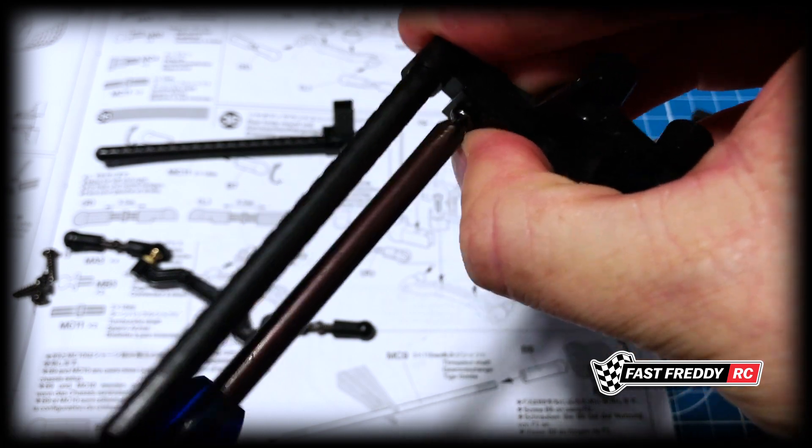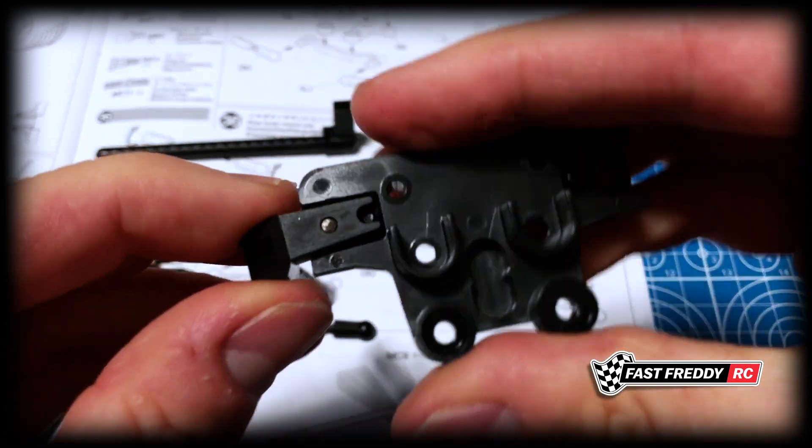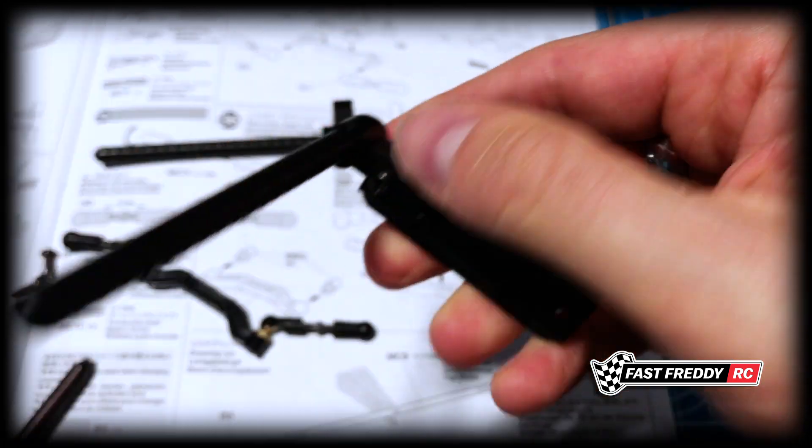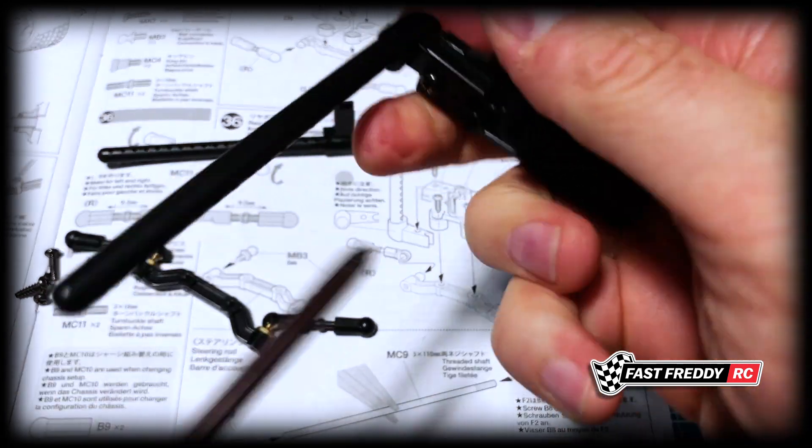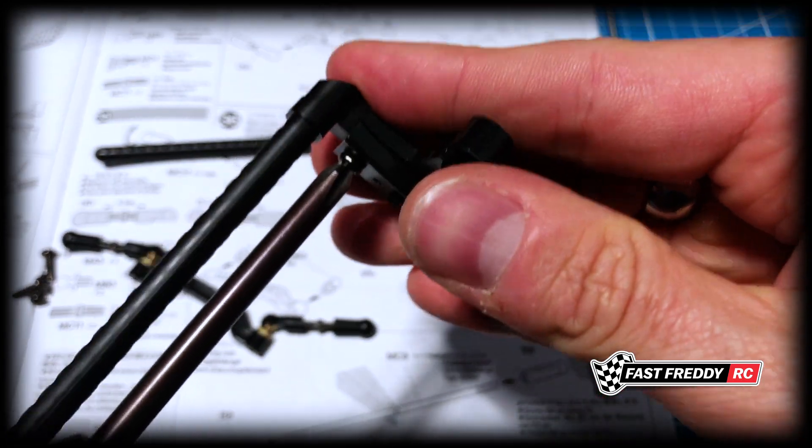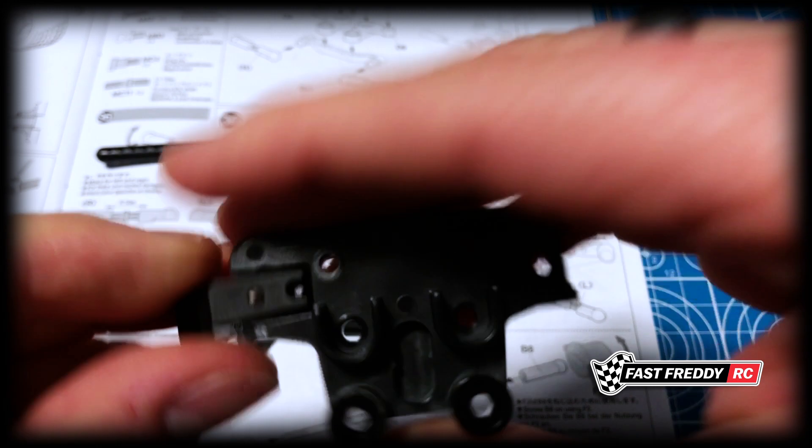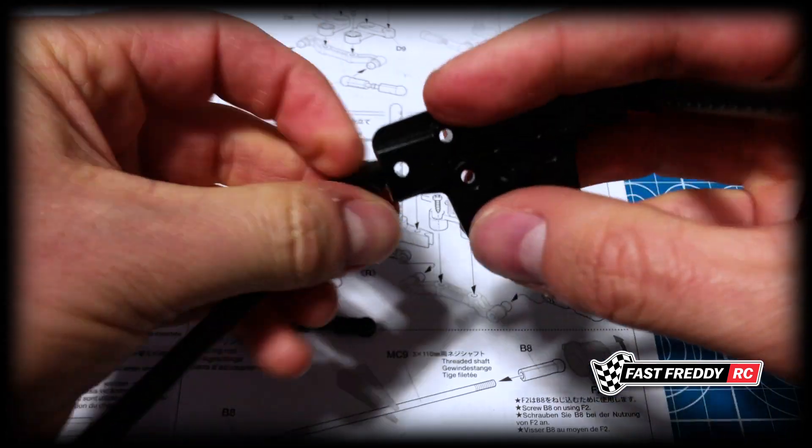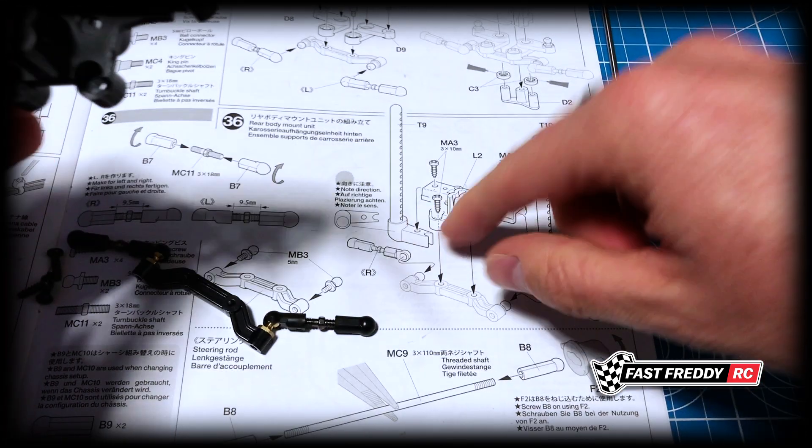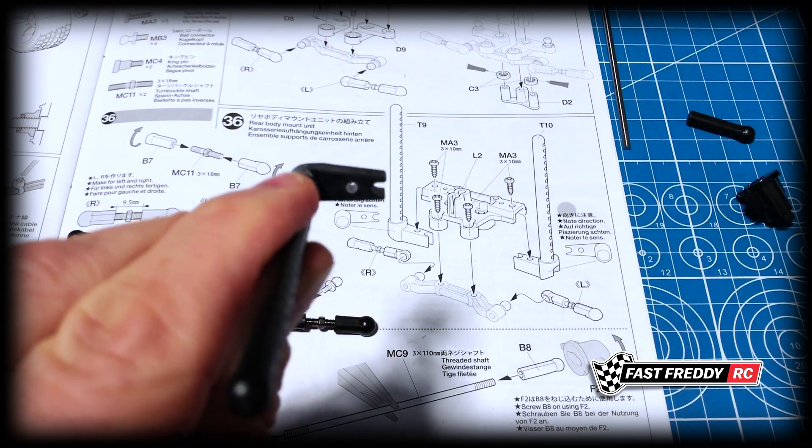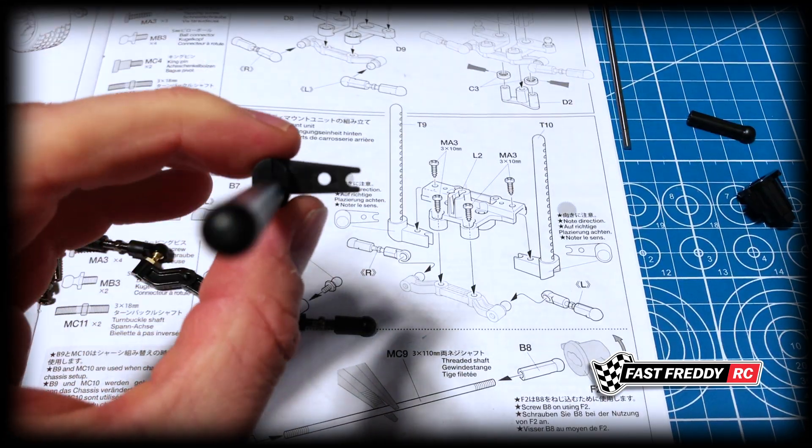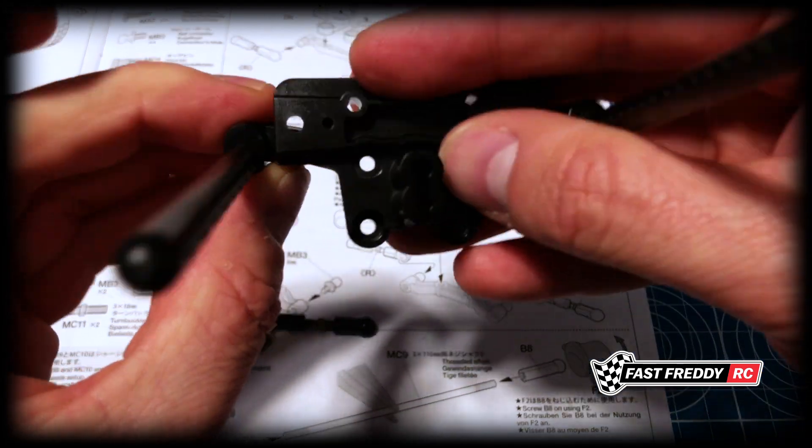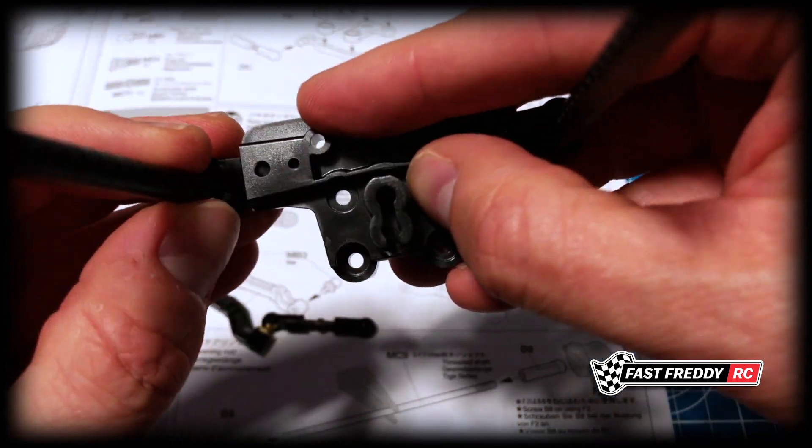We're going to do the same thing with the other side. Again, in terms of the positioning it should be like that and that going over top of that. The actual body mount posts are made of the soft plastic, so when you get to the end you don't want to over tighten, but do make sure that it's actually in there.